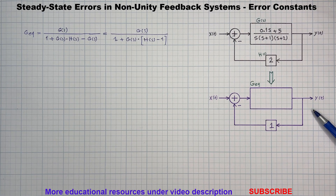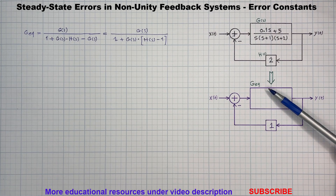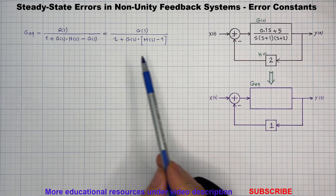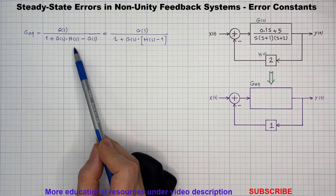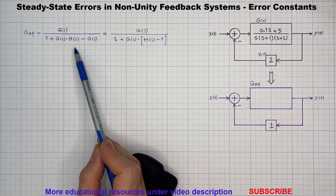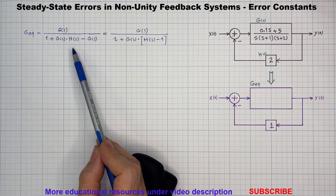We create what is called an equivalent unity feedback structure. The equivalent transfer function, which we will call G_AEQ, is calculated using the following formula. This gives us a transfer function that models a unity feedback system equivalent in terms of the steady-state error behavior.